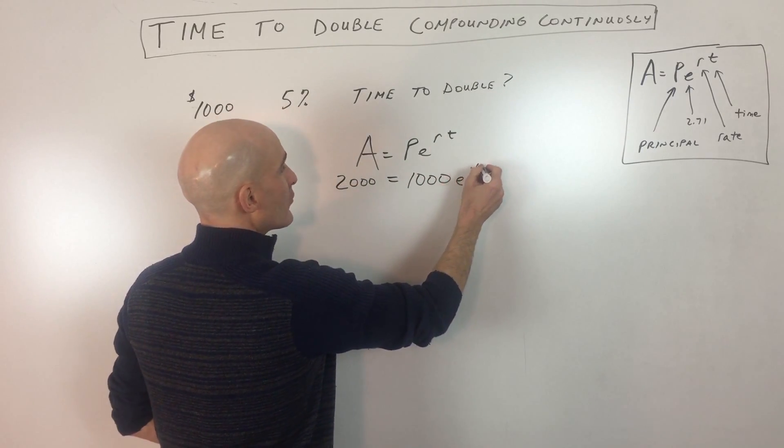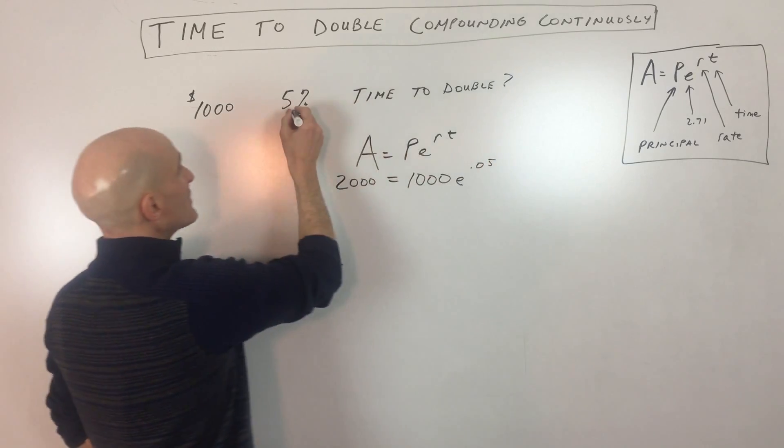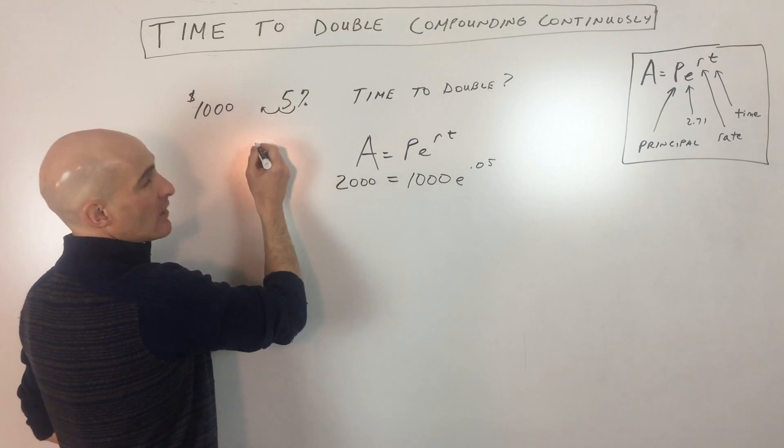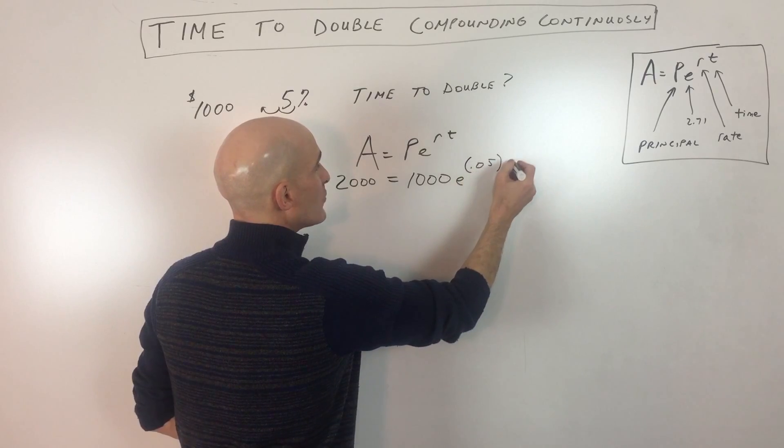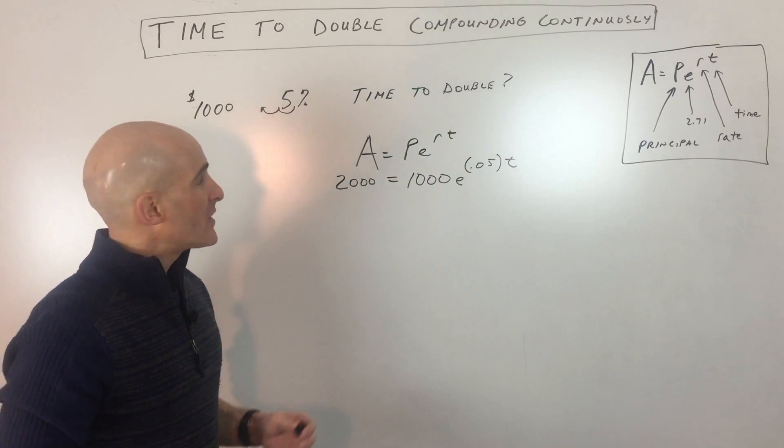E to the interest rate, 0.05. I'm just moving that decimal point two places to the left to convert it to a decimal. And then we're trying to solve for T time.